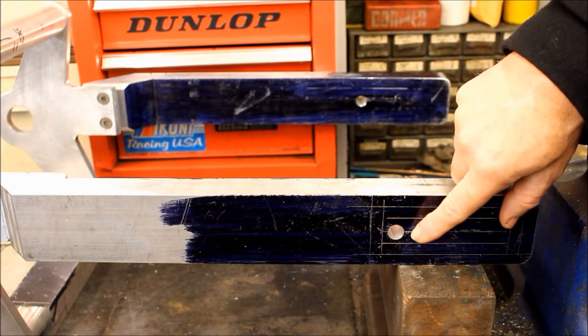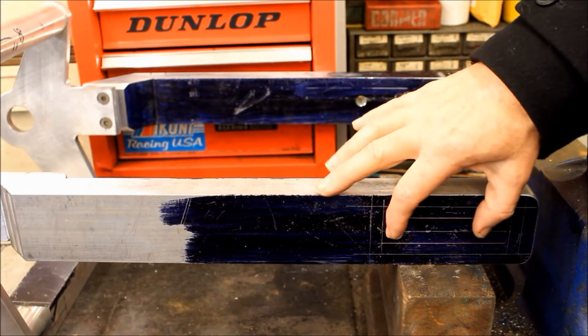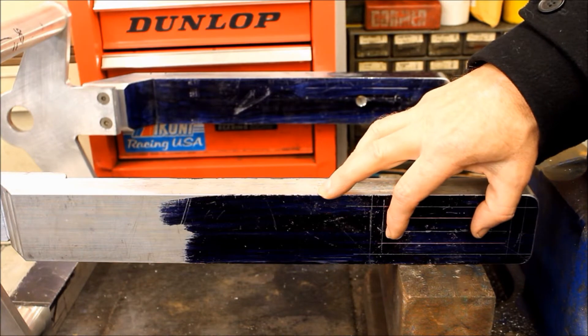We've got a little pile of swarf there because this little square here is going to be milled out. This is where the wheel adjusters are going to go.